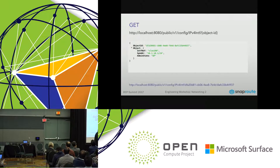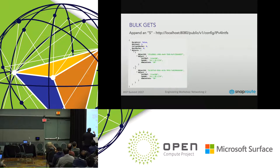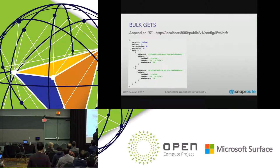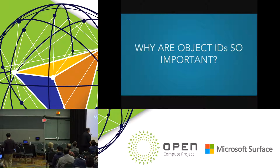You can store object IDs for later, off-box or on-box. The bulk version is simple — just add an 's' at the end, making it IPv4Interfaces. Now it returns vlan 100 and vlan 200, showing all three configured items: interface type, state, and IP address.